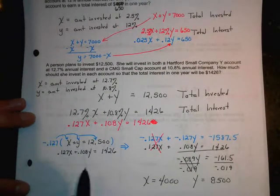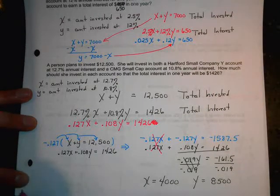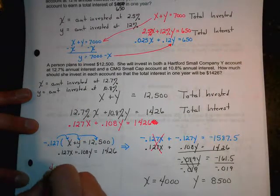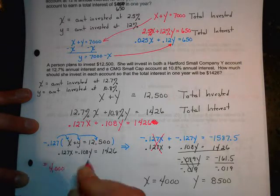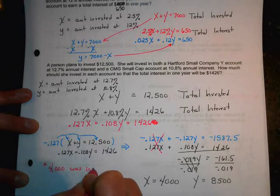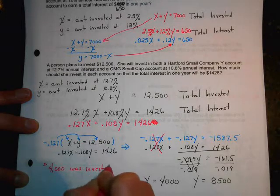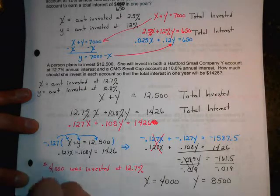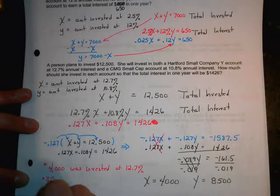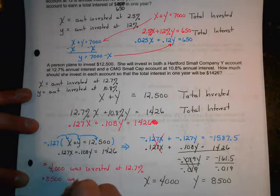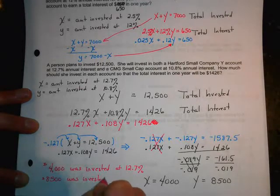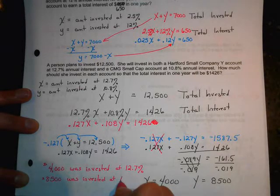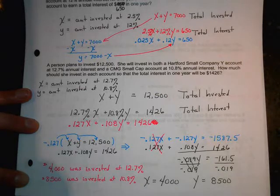So, to answer the question, then, looks like we invested, so $4,000 was invested at 12.7% interest, and $8,500 was invested at 10.8% interest. So, all the interest problems are the same.